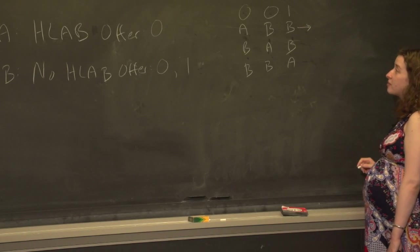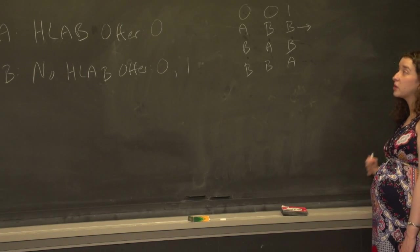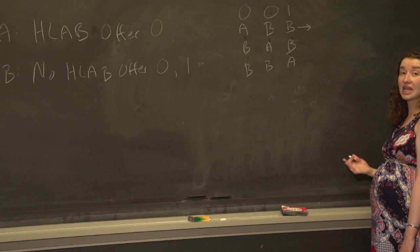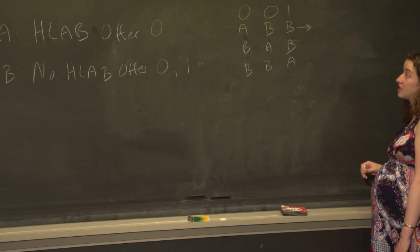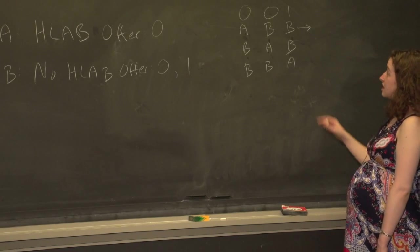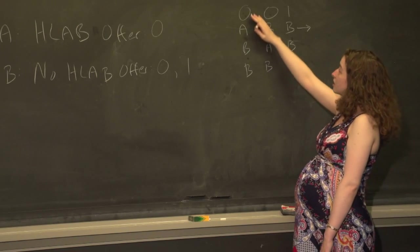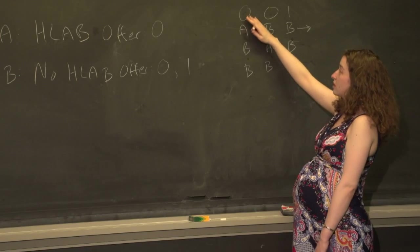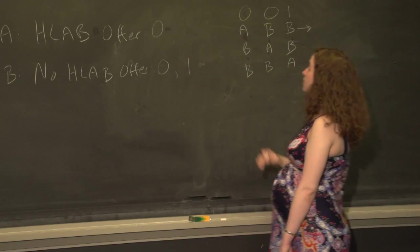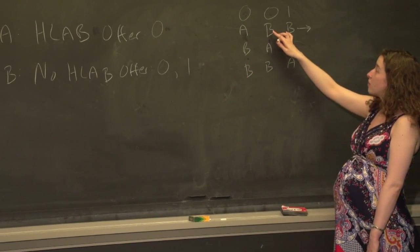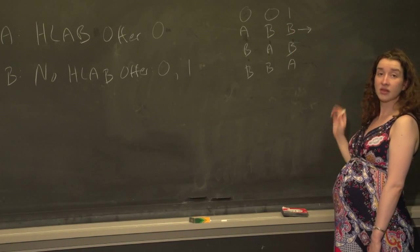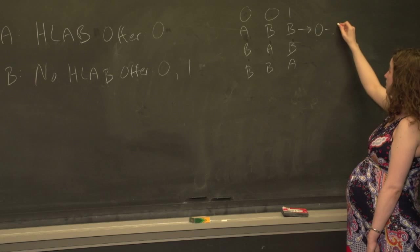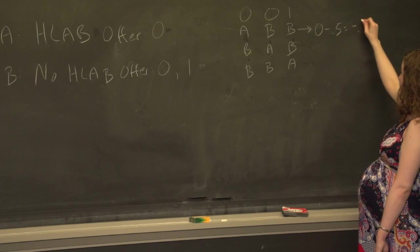We're going to think about what the value of the test statistic — the difference in means — would be for each of these possible random allocations. What we actually saw was that in group A, zero was the win rate, and in group B, the win rate was 0.5. So the difference in means that we actually saw was zero minus 0.5, which is equal to negative 0.5.